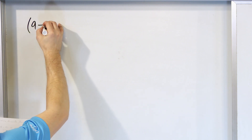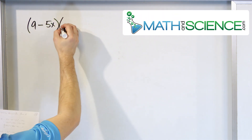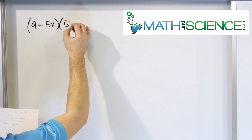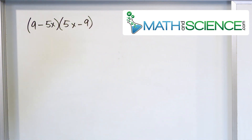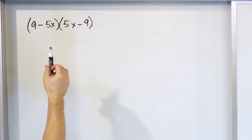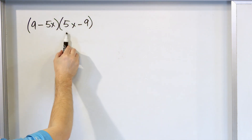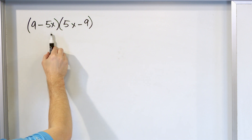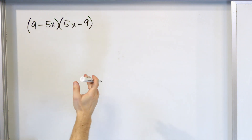What if we have (9 - 5x)(5x - 9)? As a binomial, we use first, outer, inner, last — or you can think of it as just distributing the 9 into two terms and then distributing the negative 5x into two terms. Same exact thing.